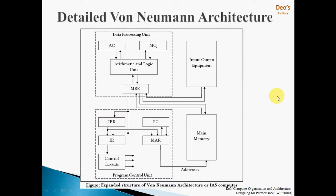This is the detailed von Neumann architecture. What we saw earlier was the brief architecture; this is the detailed one. The detailed architecture contains a data processing unit, a program control unit, input/output equipment, and the main memory unit.